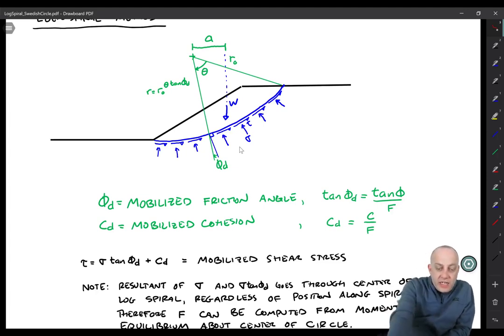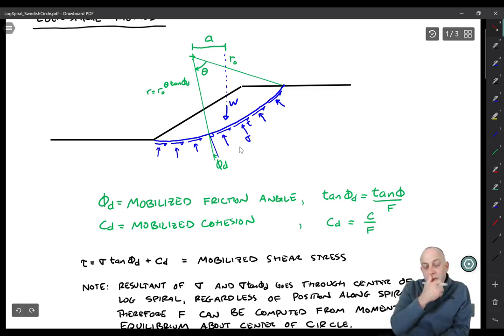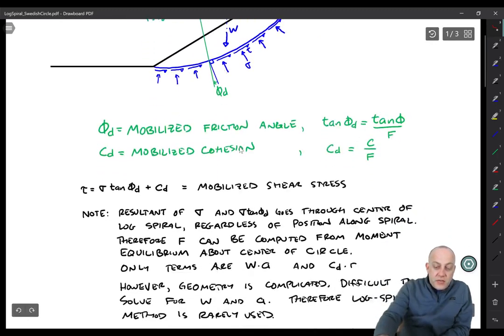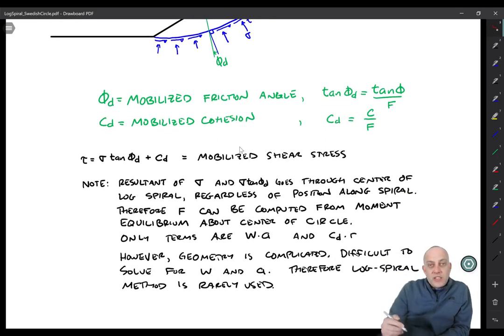The way we usually handle it actually is to divide it into slices and just find the centroid and weight of each slice. So if we're going to do that, we might as well just use the method of slices itself. So that's the reason why we don't tend to use the log spiral method anymore. It's kind of just a lot of work to find these centroids and weights.